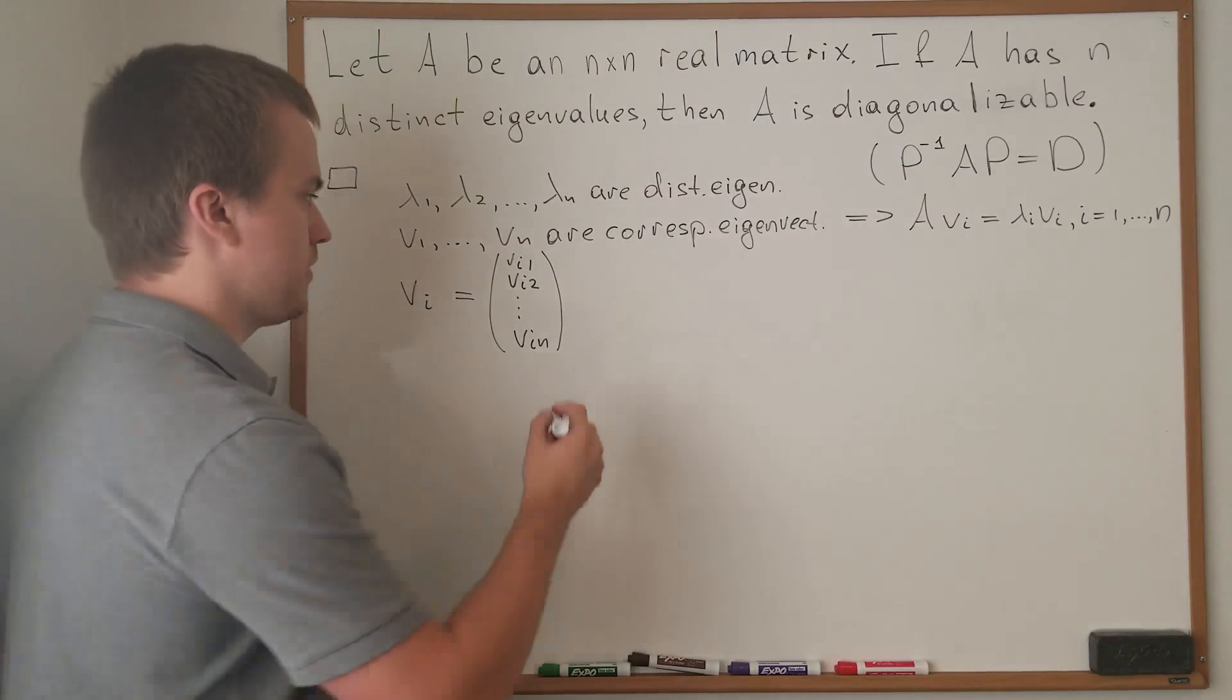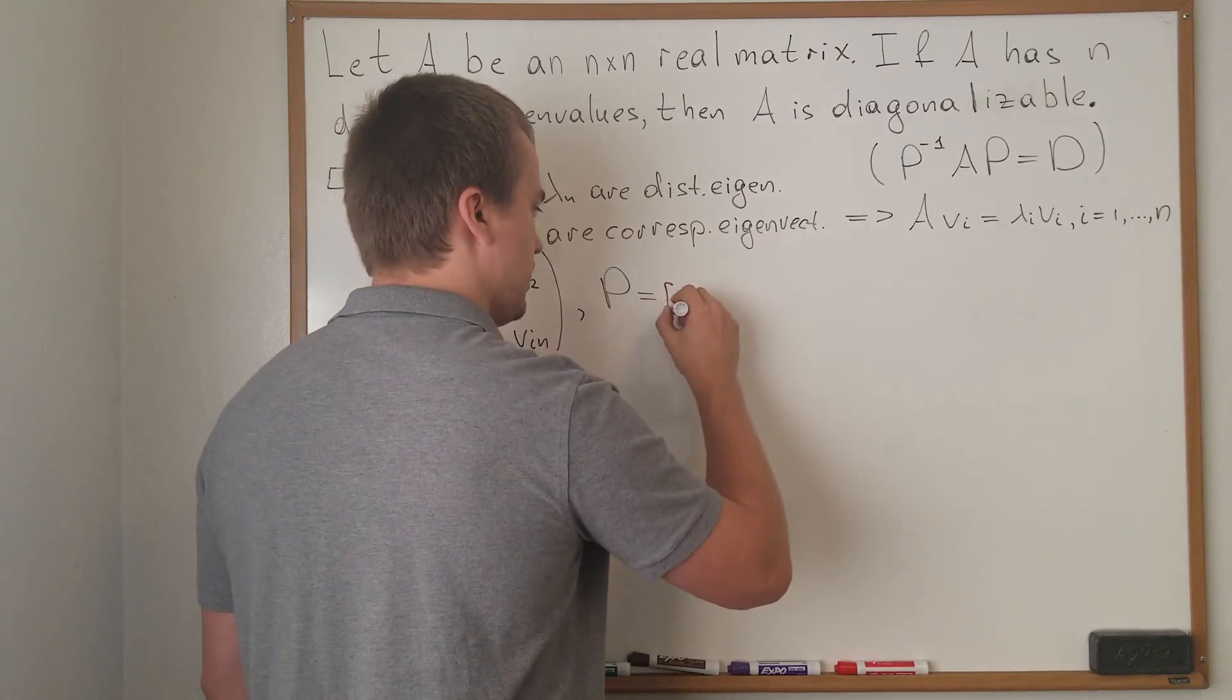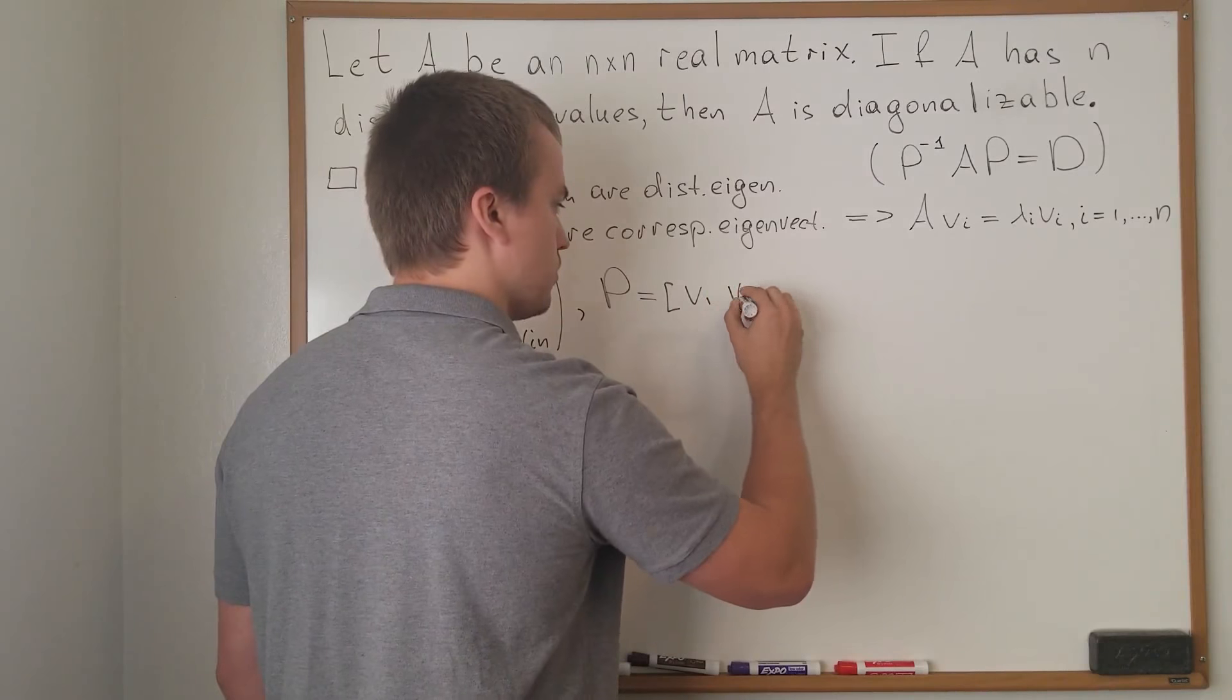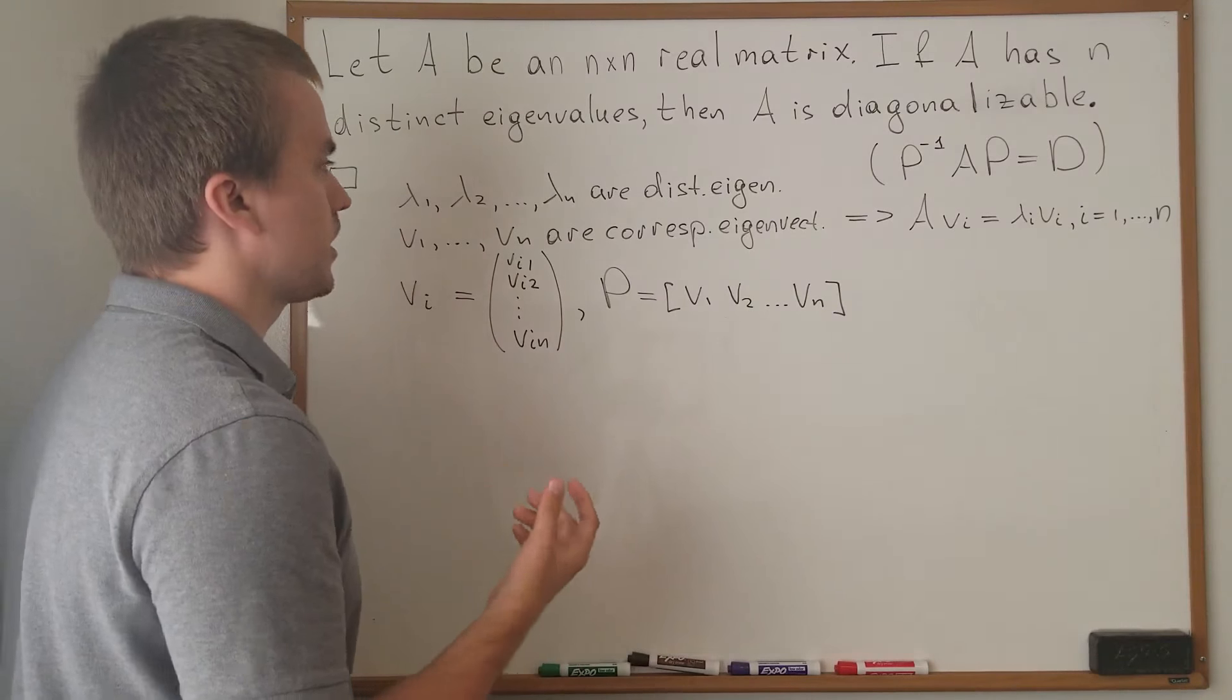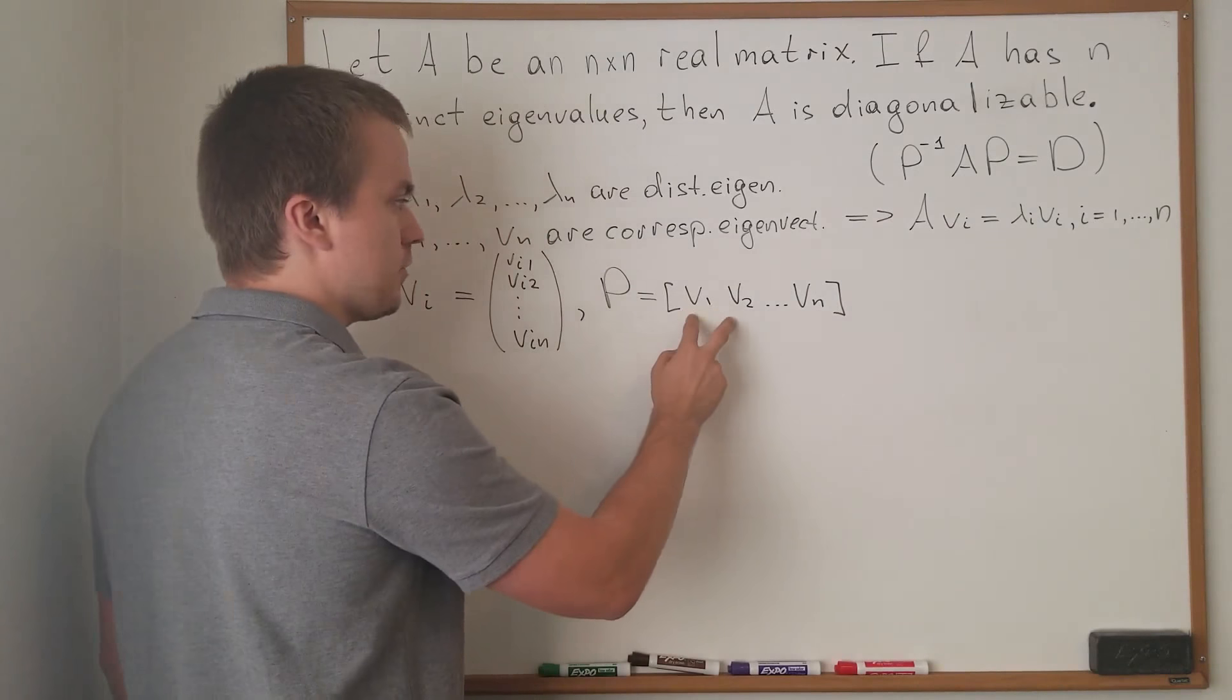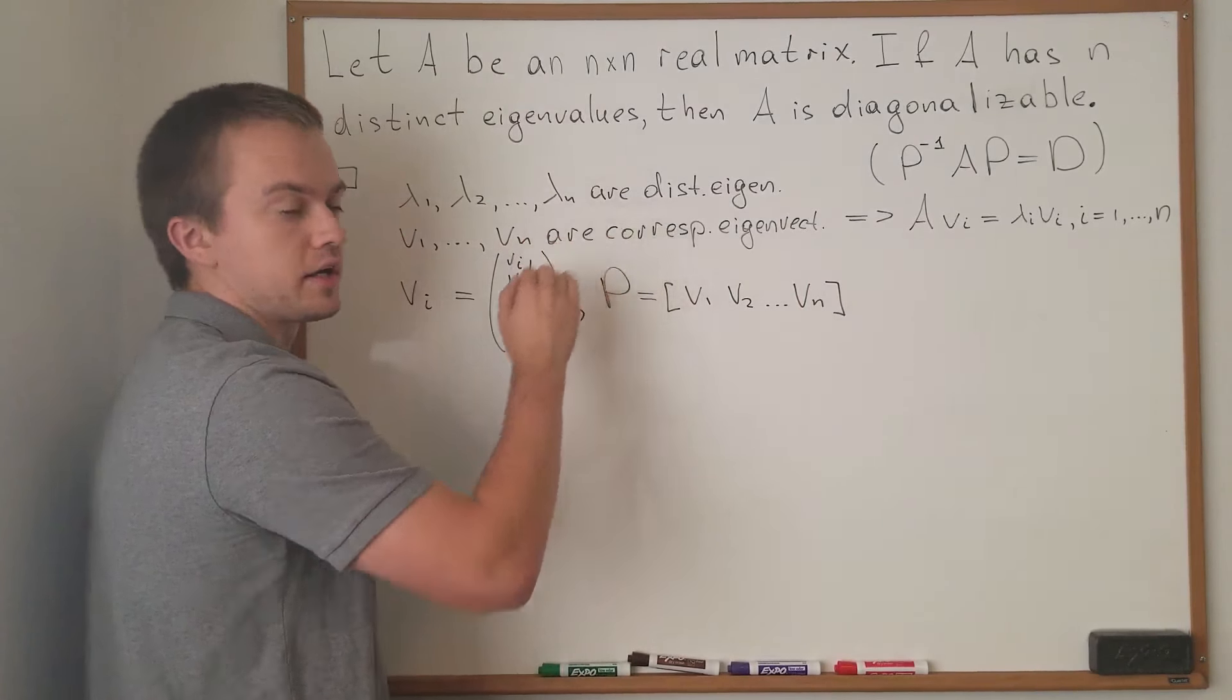How are we going to create our matrix P? Let's make our matrix P equal to V1, V2, and Vn. By using matrix multiplication, we know that matrix P should be a square matrix, and here we can see that each column of our matrix is going to be just our original eigenvector.